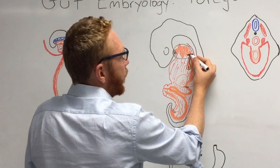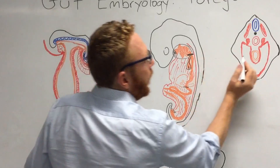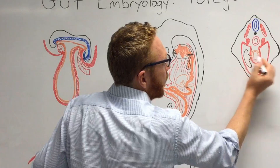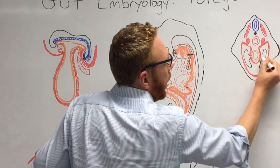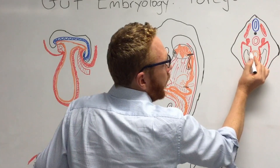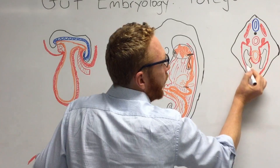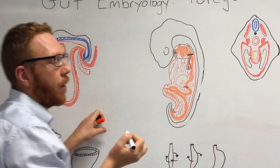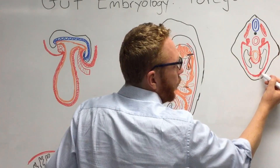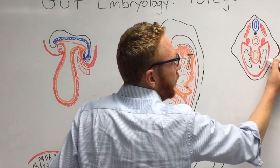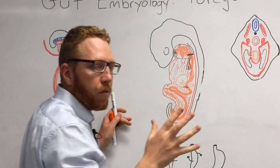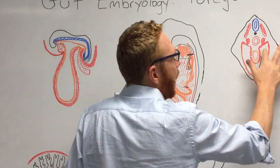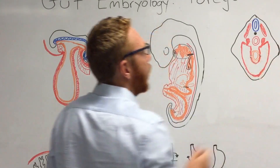As the lung bud develops, it comes out into the coelom space, pulling the lining with it. The lining around the lung becomes the visceral pleura, with the parietal pleura on the outer wall, and the lung fills that space. Since we've already covered respiratory embryology, I won't go into further detail on that here.